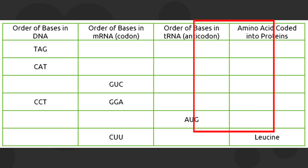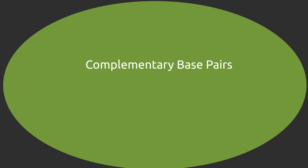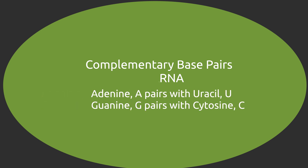To determine the order of bases in DNA in the first column, the order of bases in mRNA or the codon in the second column, and the order of bases in tRNA or the anticodon in the third column, we are going to consider base pairing or complementary base pairs. In DNA, adenine pairs with thymine and guanine pairs with cytosine. While in RNA, adenine pairs with uracil and guanine pairs with cytosine.